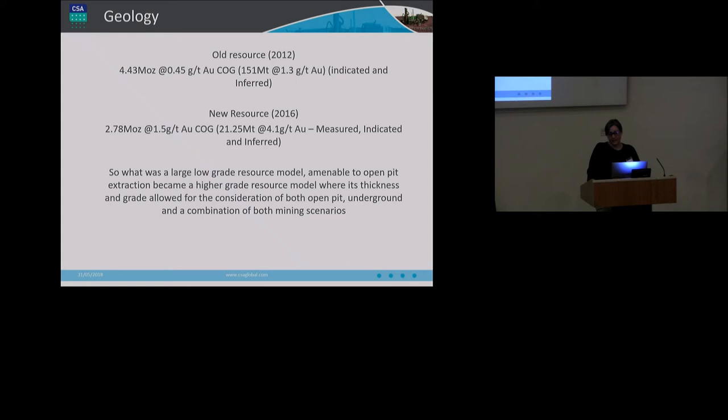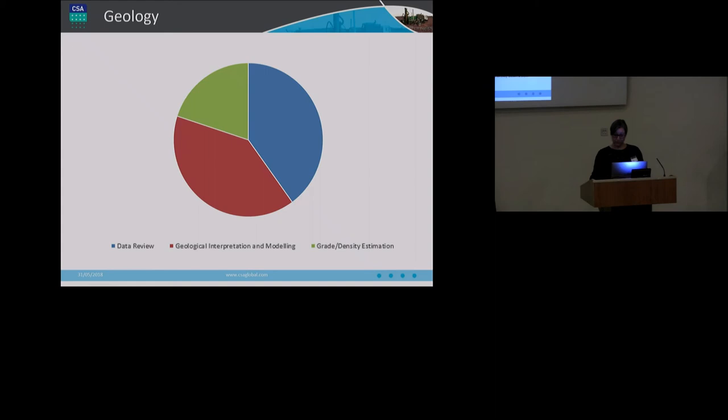It's difficult to compare the two resource models by contained ounces, as the new mineralization domains didn't cover the same area as the previous model. But what is important to note is the increased confidence in the new model. We went from indicated and inferred to measured, indicated and inferred, which has implications for mine planning and project value. This increase in confidence demonstrates the value of an experienced geologist re-logging and re-mapping based on a standard set of criteria. And the importance of linking everything into the model really added value here. And it highlighted further opportunities that may have previously been overlooked.